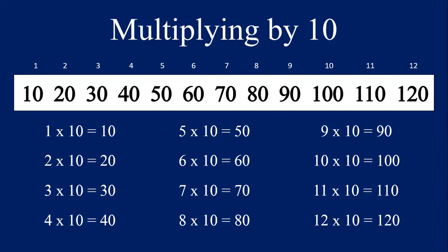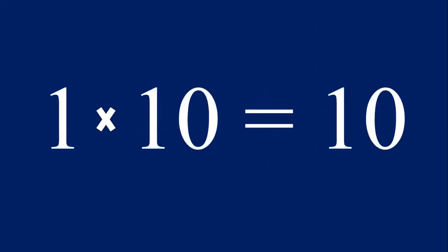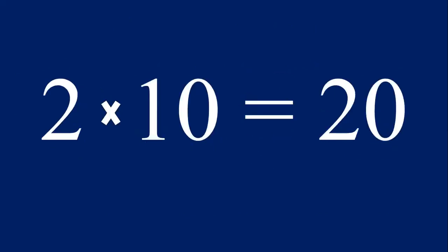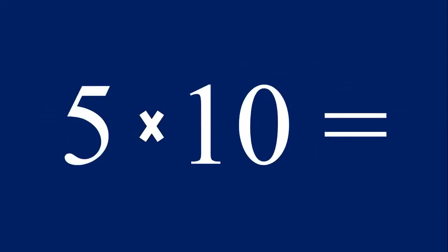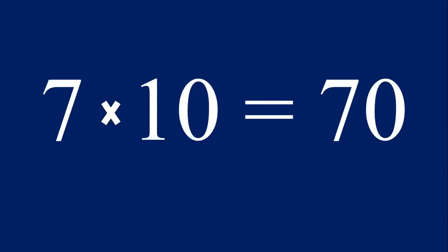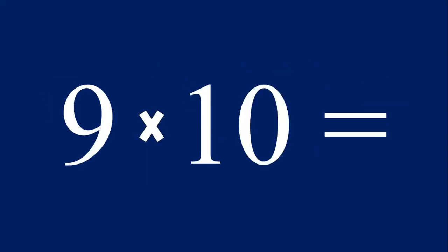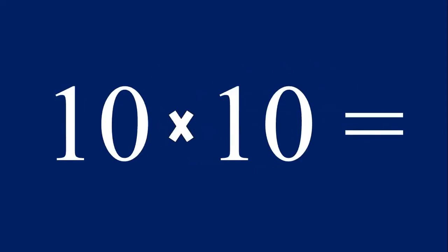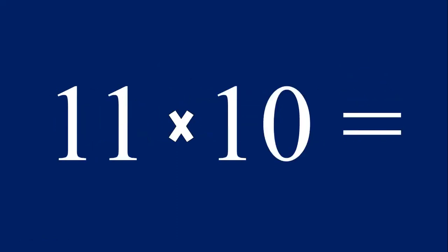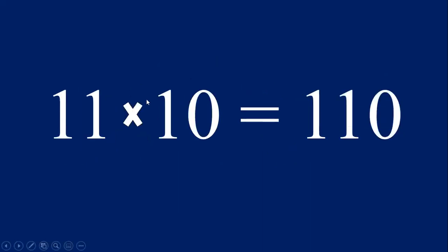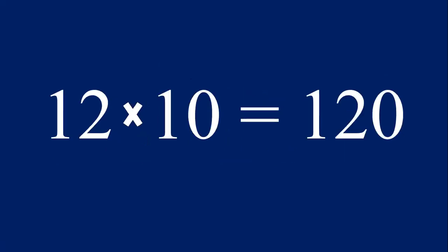Now let's multiply one through twelve by the number ten. One times ten equals ten, two times ten equals twenty, three times ten equals thirty, four times ten equals forty, five times ten equals fifty, six times ten equals sixty, seven times ten equals seventy, eight times ten equals eighty, nine times ten equals ninety, ten times ten equals one hundred. Just remember, take the zero from the ten and put it behind the number you're multiplying — so eleven times ten equals one hundred and ten, and twelve times ten equals one hundred and twenty.